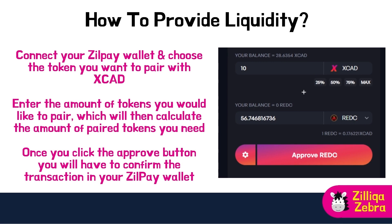Providing liquidity is very similar to other DEXs such as Uniswap or PancakeSwap. Go to the pool page of the XCAD DEX via the link provided. Connect your ZilPay wallet and choose the token you want to pair with XCAD — you must have both tokens of the pair in the same wallet. Enter the amount of tokens you would like to pair; the DEX will calculate the paired amount needed. Click Approve and confirm the transaction in your ZilPay wallet. Once complete, click Add Liquidity to provide the tokens to the LP. You will then earn the rewards shown on the pool overview page, plus a fee from a percentage of transactions on your pair.